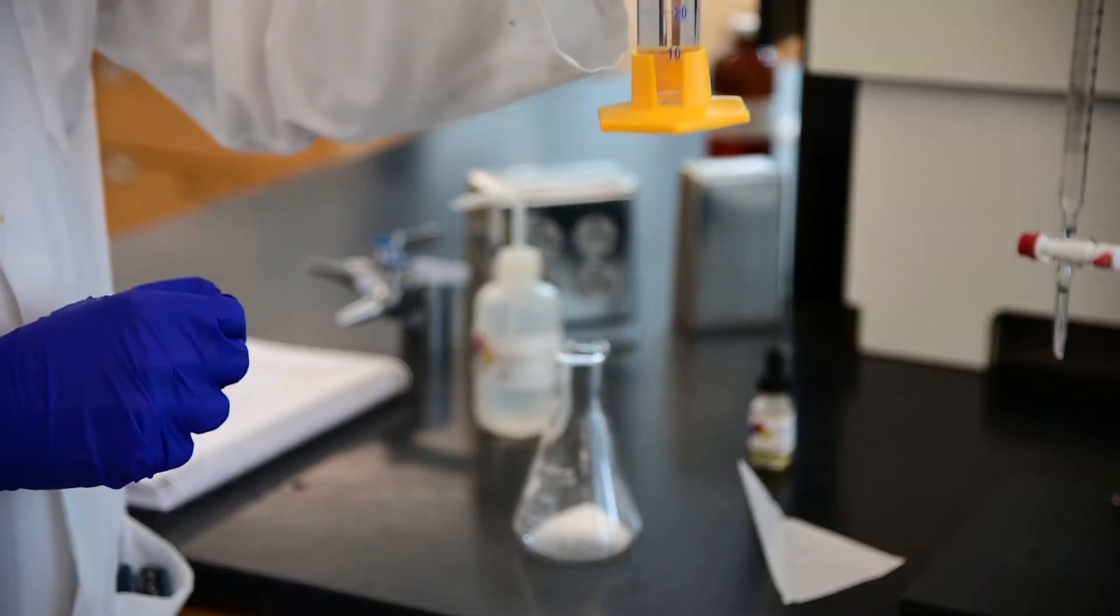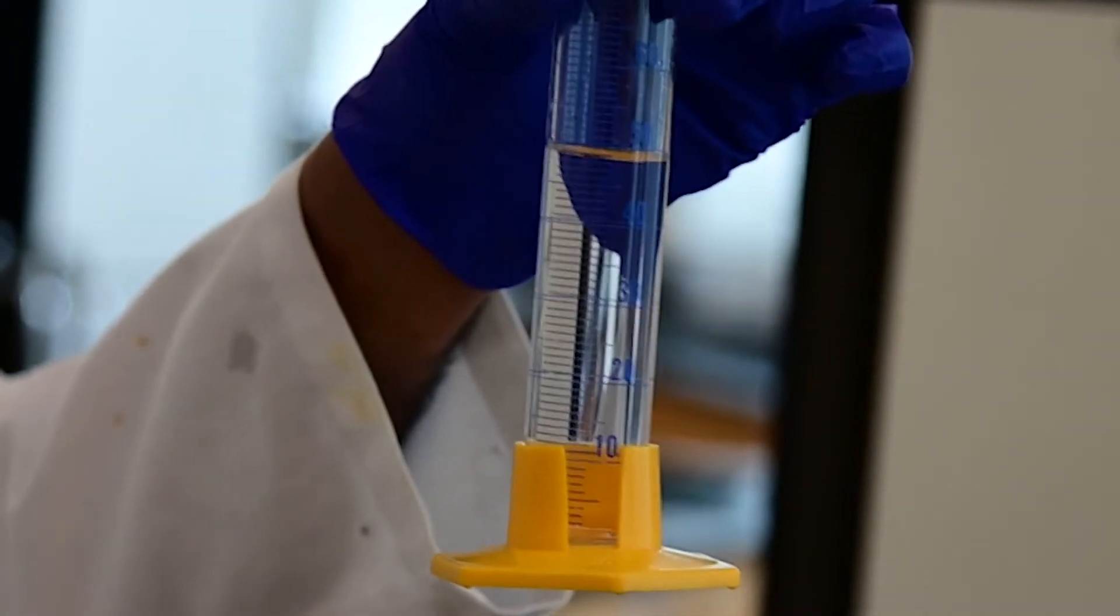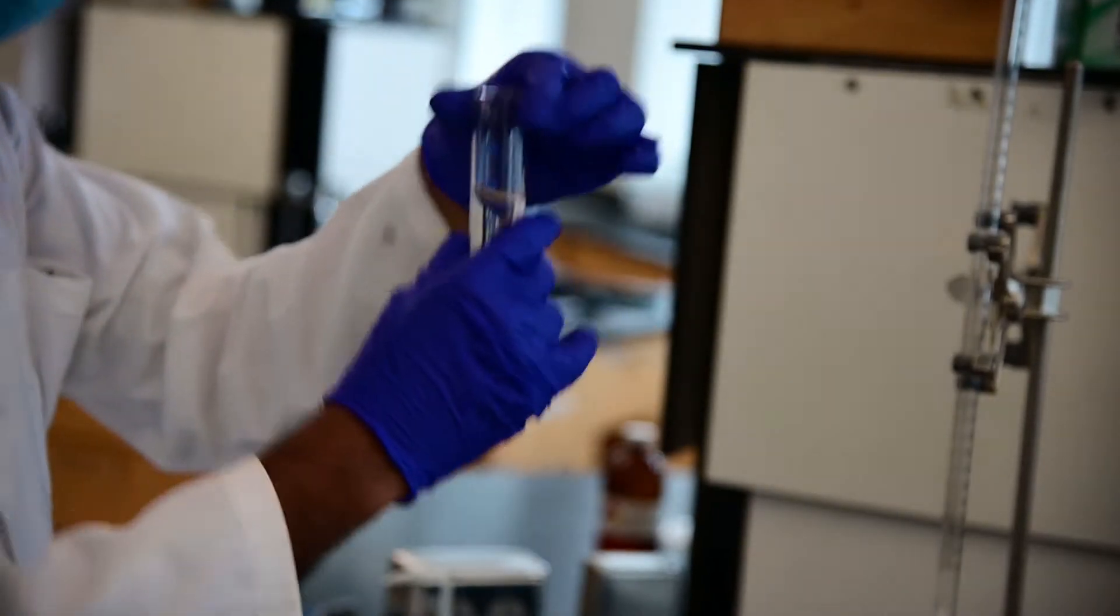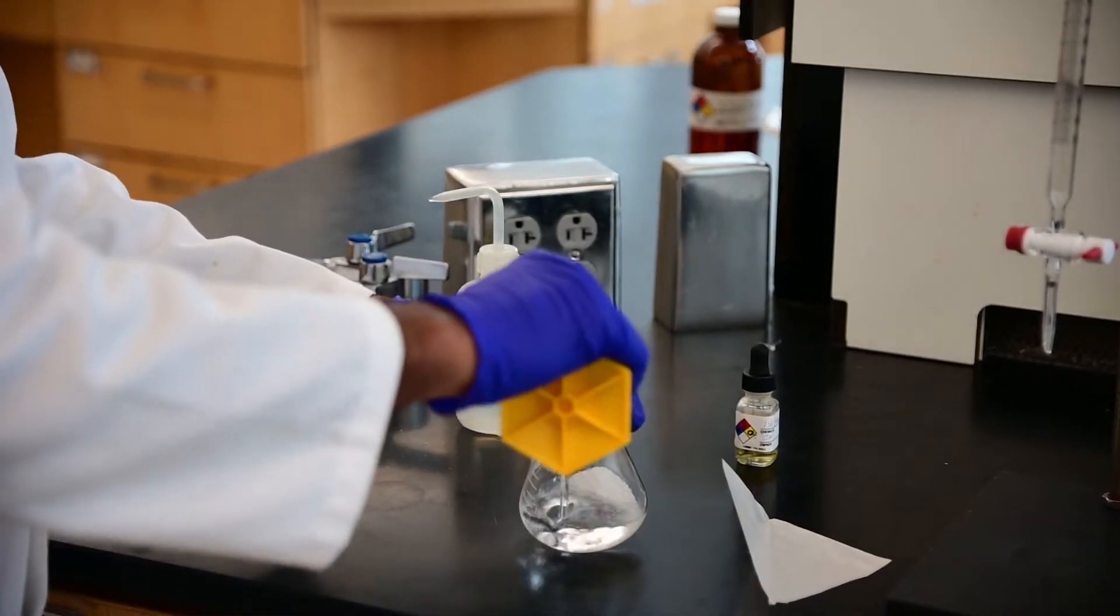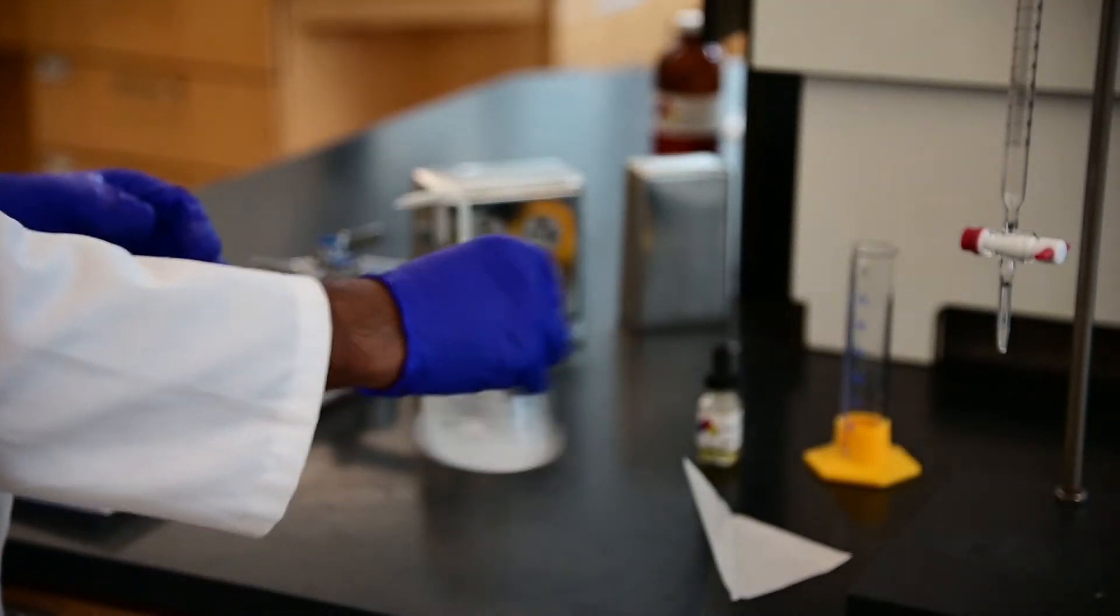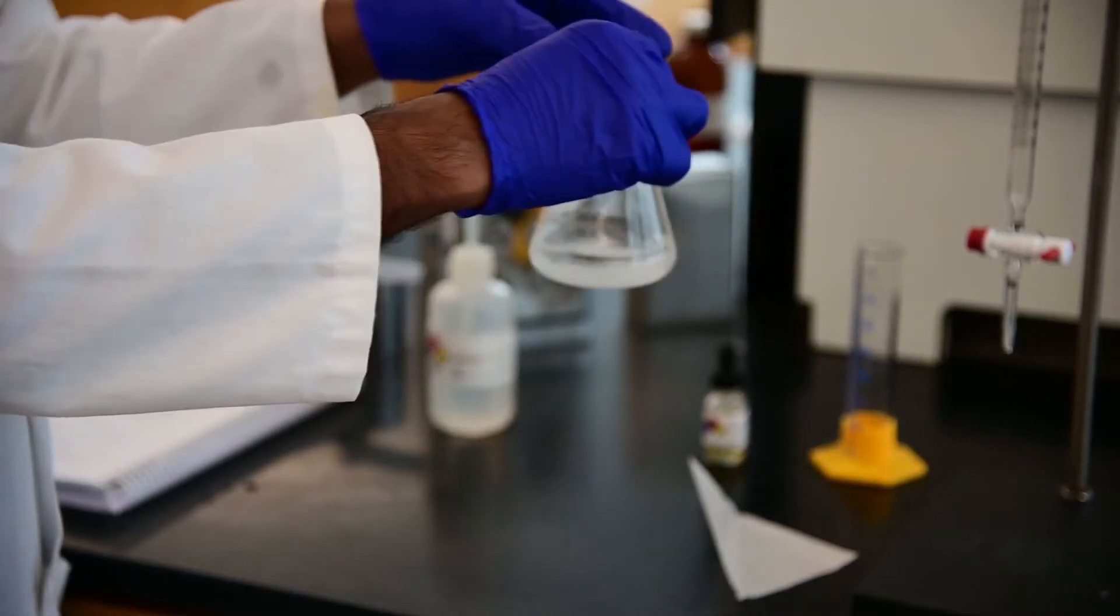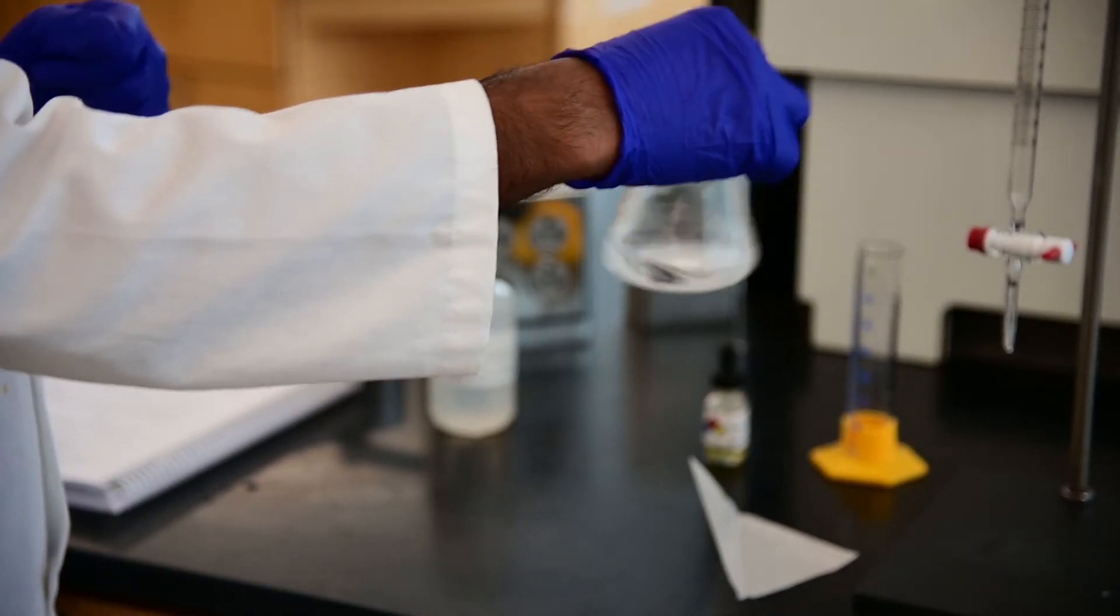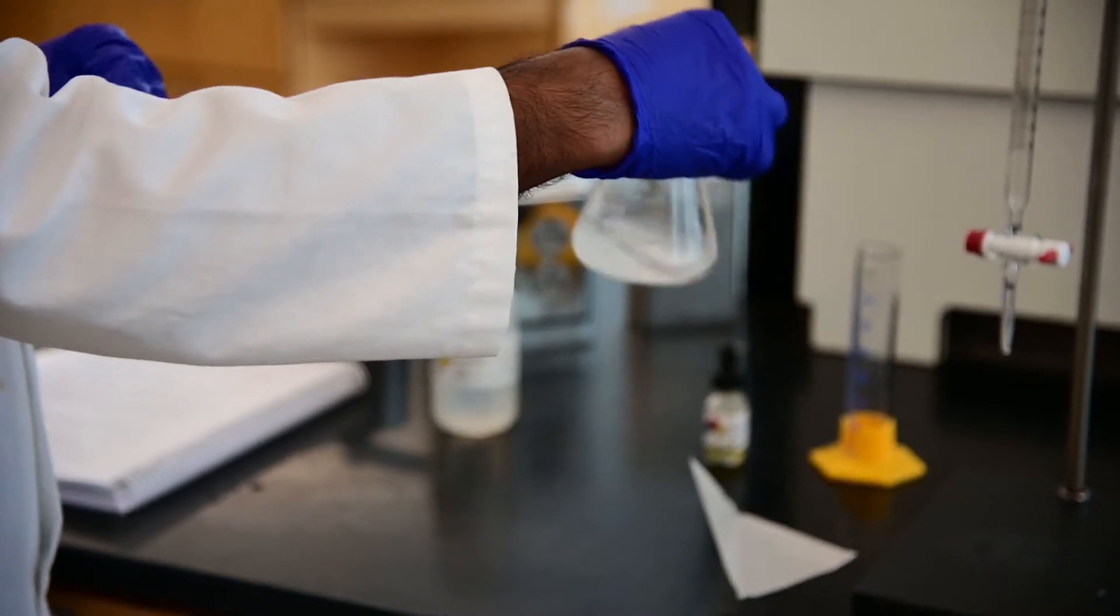Now I have 50 ml of distilled water in the graduated cylinder. I'm going to transfer that in the Erlenmeyer flask and make sure that the solid KHP is completely dissolved. It's important to make sure the solid is completely dissolved because that's the source of the acid in this reaction.